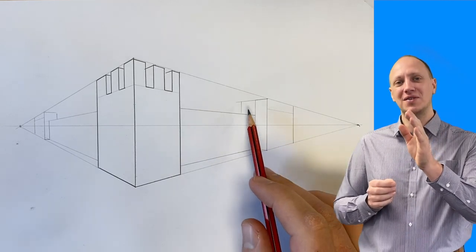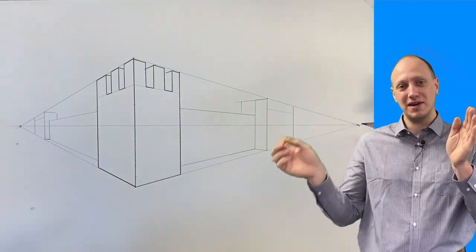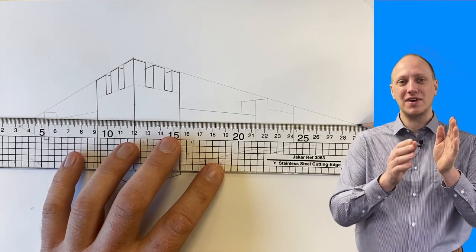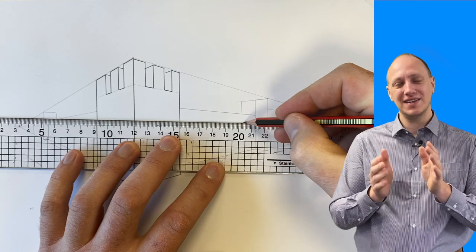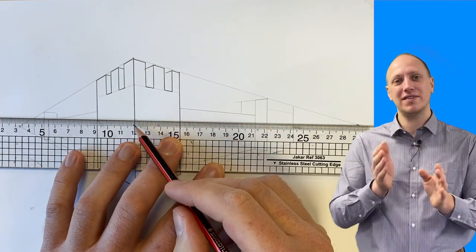If the crenelations are on the left side of your drawing, those lines go to the right vanishing point. If those crenelations are on the right side of your drawing, take the lines to the left vanishing point on the opposite sides.